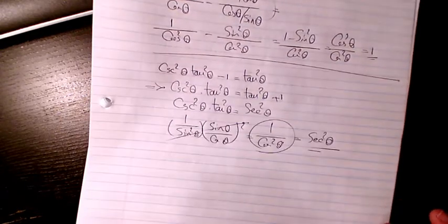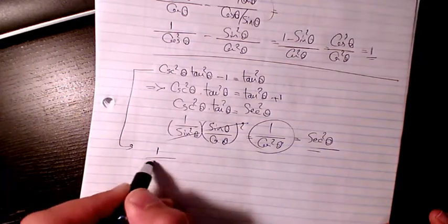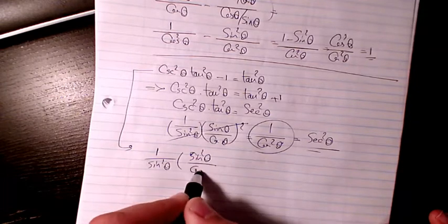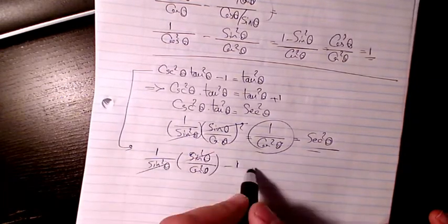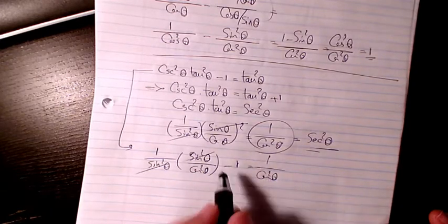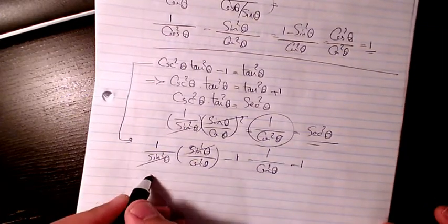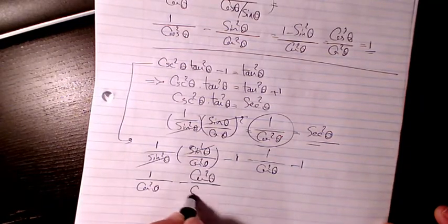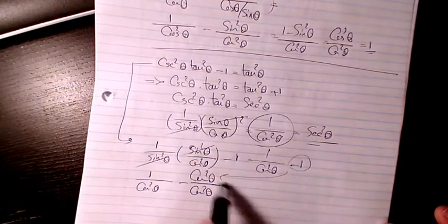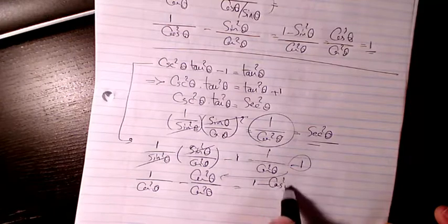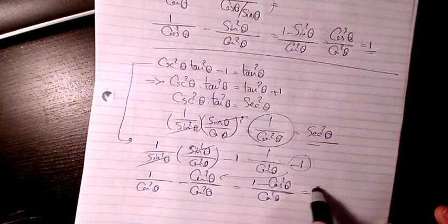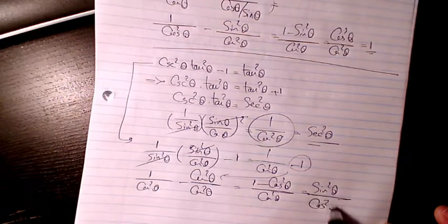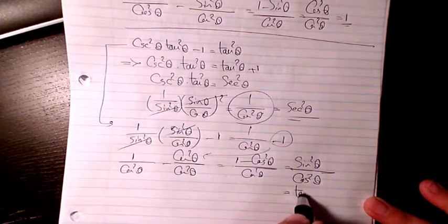That's proven. We can also use 1 over sine — that's the second method. We have sine squared theta divided by cosine squared theta minus 1. These two cancel out. I will have 1 over cosine squared minus 1, and I can write 1 over cosine squared minus cosine squared divided by cosine squared. Instead of 1, I can write cosine divided by cosine, and I have 1 minus cosine squared theta divided by cosine squared theta. Then I have sine squared, because 1 minus cosine squared is sine squared divided by cosine squared, so I have tan squared theta.